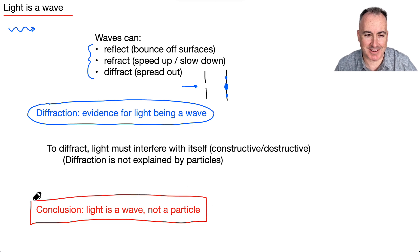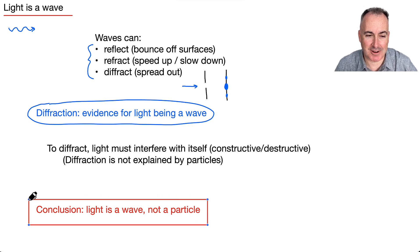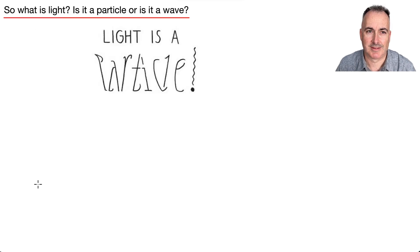Are you noticing a problem here? We just said before that because of photoelectric effect, light has to be a particle, not a wave. And then we just said that, hey, because of diffraction, light has to be a wave, cannot be a particle. So which is it? Is light a particle or is it a wave?